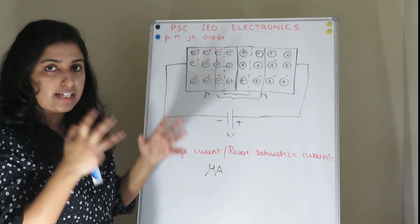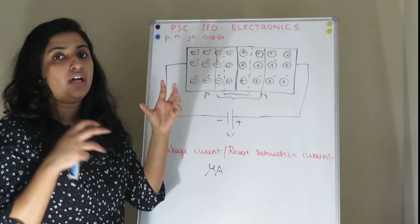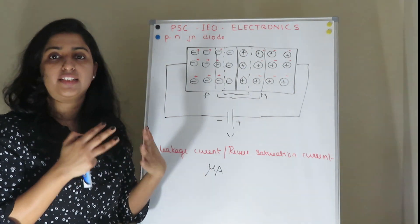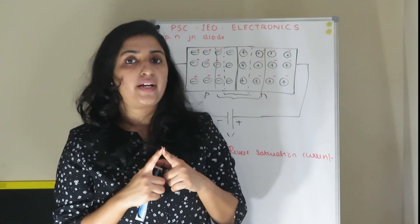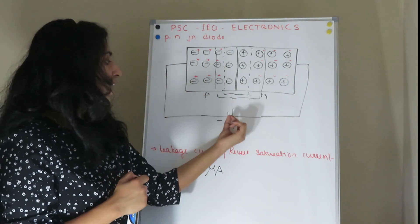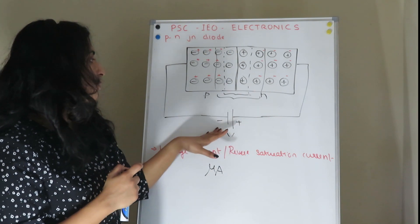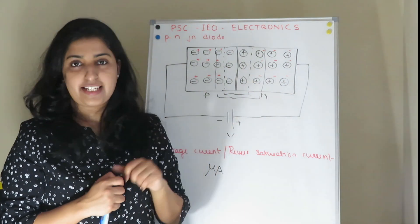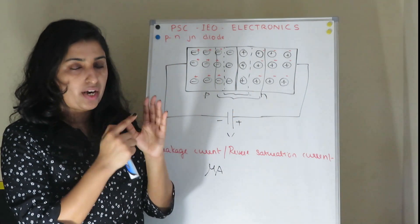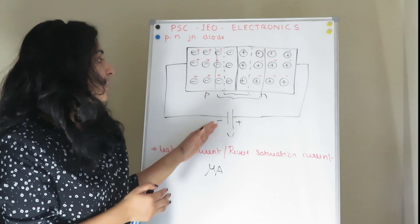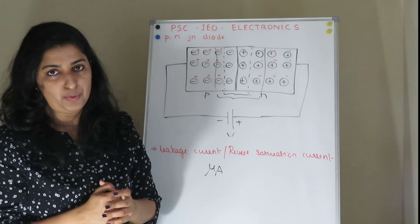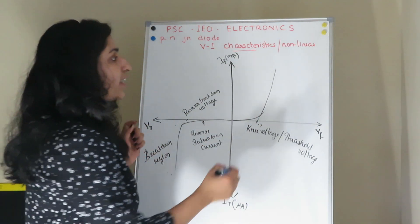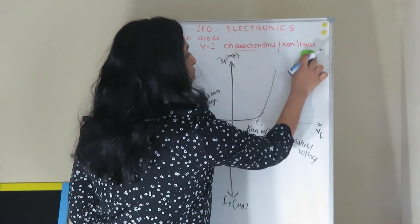Also, if we increase the voltage to a particular level, the PN Junction Diode will overheat and the maximum amount of current will pass — the PN Junction Diode breaks down. This is the reverse biasing condition. For forward biasing, positive terminal to P-type and negative terminal to N-type. For reverse biasing, negative P-type and positive N-type. The VI characteristics of PN Junction Diode are non-linear — it is not a resistance factor; we get a non-linear curve rather than a straight line.